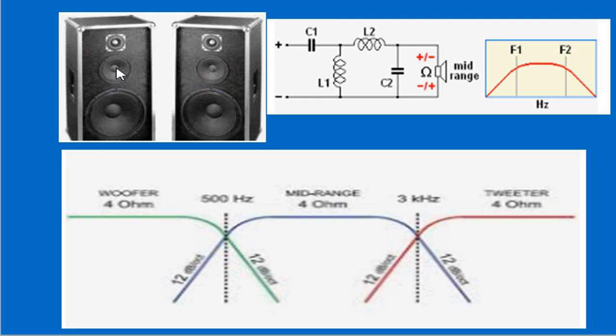C'è poi quello che viene chiamato mid-range, che riproduce tutta la banda centrale. Andiamo poi al tweeter. Il tweeter è in grado di oscillare fino a oltre i 20.000 Hz. Certe volte se ne fa un uso per frequenze non udibili — magari qualcuno li usa per scacciare i topi o altre cose.